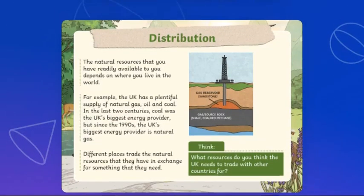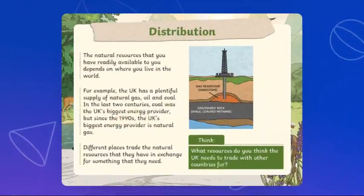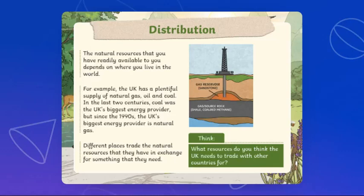We also have minerals. Examples of minerals include quartz, salt, iron, clay, and sand. Most precious metals and precious stones are types of minerals. Some of the ways in which we use minerals are in construction, manufacturing, electronics, and energy supply.